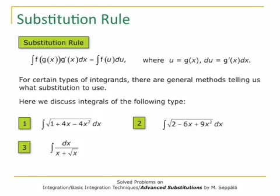Finding substitutions that work is not always easy. In this set of solved problems, we consider the integration of square root of (1 + 4x − 4x²). Secondly, the integral of square root of (2 − 6x + 9x²) dx. And the last problem is to integrate dx divided by (x + √x).